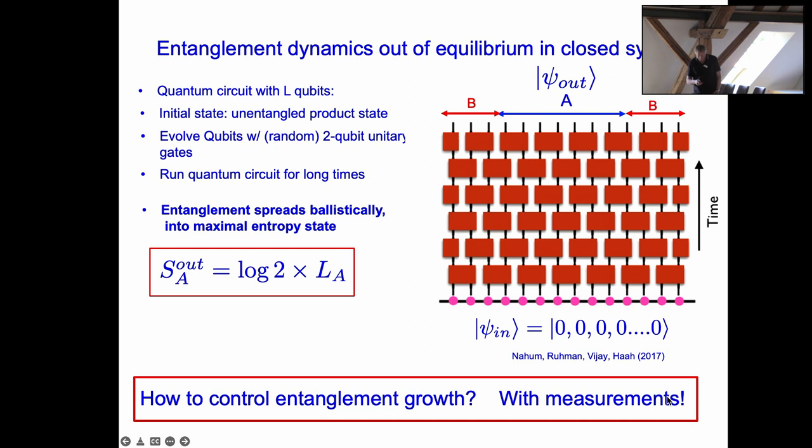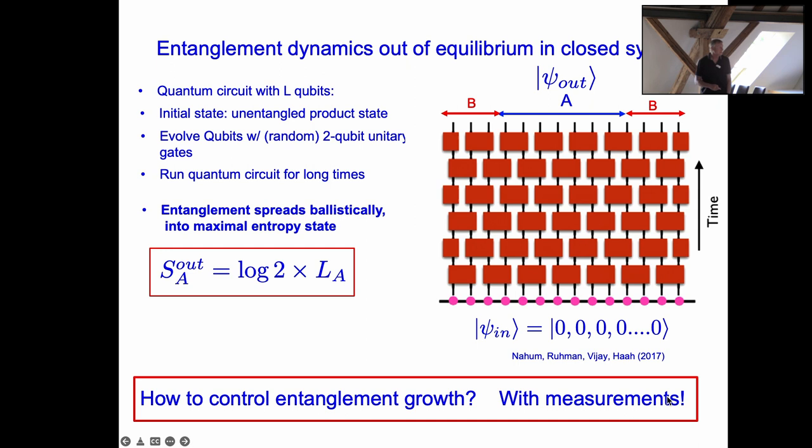High entropy means low information and high disorder. If you have too much disorder, you lose structure. I've been interested in how to control this growth of entanglement, and one way to do that is by making measurements. So that's what I'm going to turn to next.